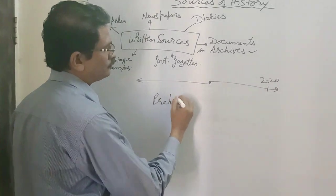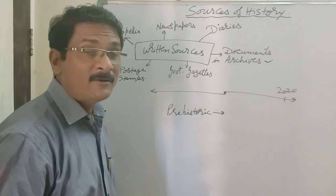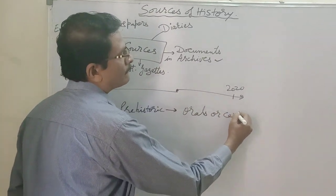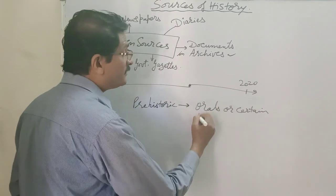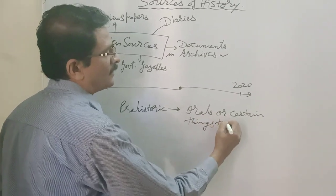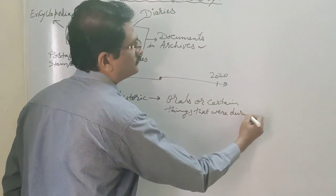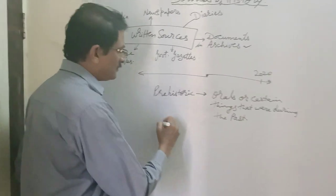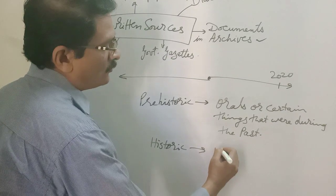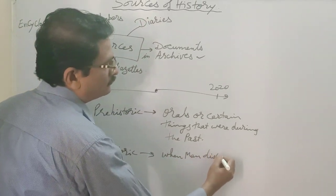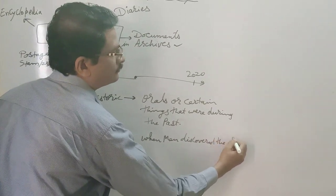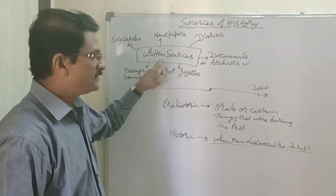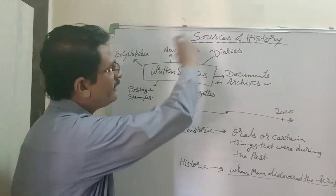The prehistoric period is the time when only verbal language was used, and oral traditions or certain things from the past are put as evidence. But the historic period starts when man discovered the script and he started writing. Hence, history as a written source begins here. We have various sources of history.